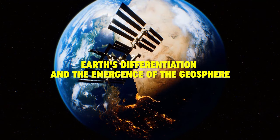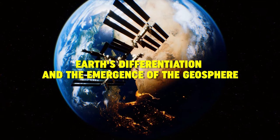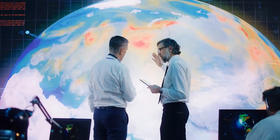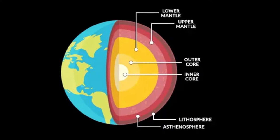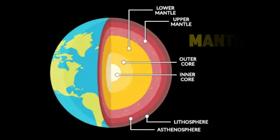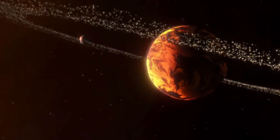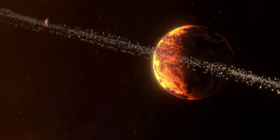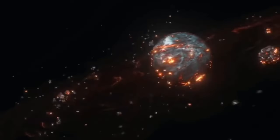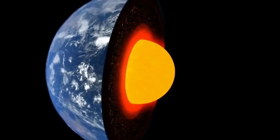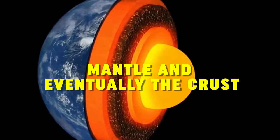As the early Earth evolved, it underwent a remarkable process of differentiation, segregating into distinct layers: the core, mantle, and crust. This stratification was driven by the varying densities of Earth's constituent materials. Heavier elements, like iron and nickel, sank towards the center, forming the core, while lighter materials rose to form the mantle and eventually the crust.